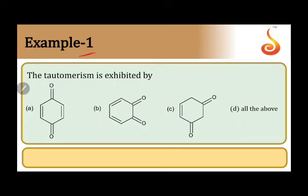Example 1: the tautomerism is exhibited by - if we see this first compound over here we can see the keto groups C double bond O here and there is one more C double bond O here. Diketone we have.